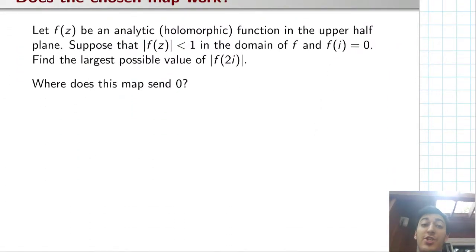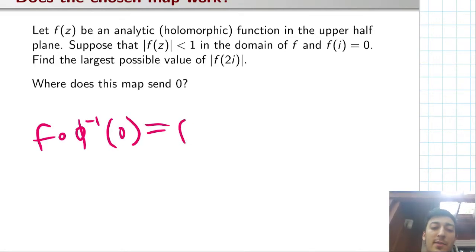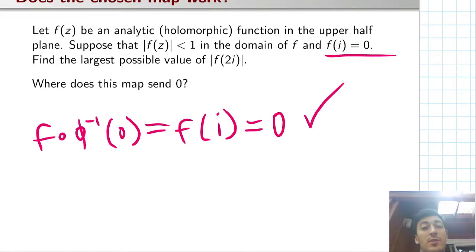But we need to check something else. We need to check whether or not this map fixes zero because that's the second assumption we need to use Schwarz's lemma. If you look up the formula for the inverse of the Cayley transform, or you've just done it yourself, then the neat part about this problem is that it just sends zero to i. But we already know and have assumed that f(i) is just zero. So this works. In fact, this map fixes zero, and we can apply Schwarz's lemma.